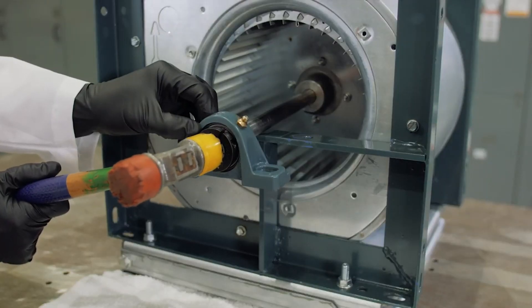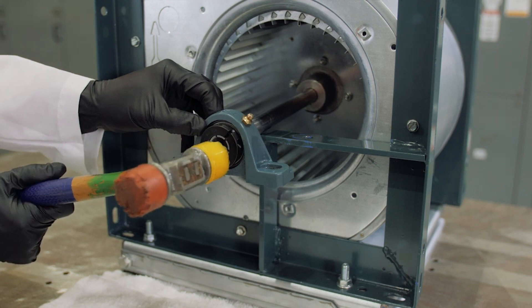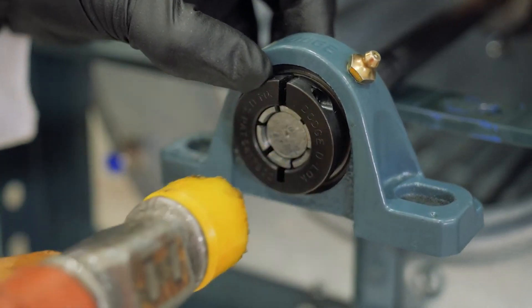Slip the bearing into the desired position. For tighter fits, tap the face of the inner ring with a soft driver. Do not strike the housing as this may damage the bearing.